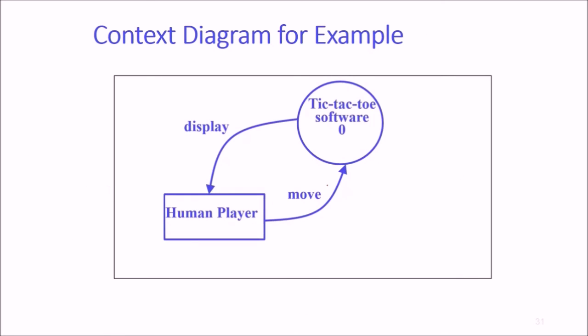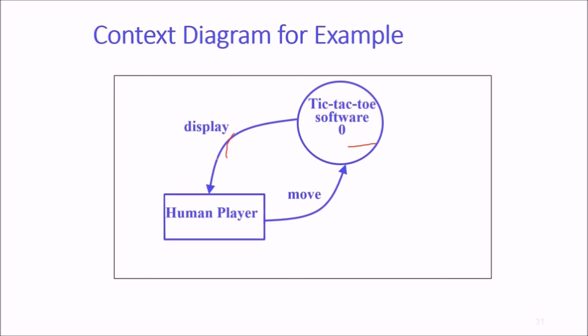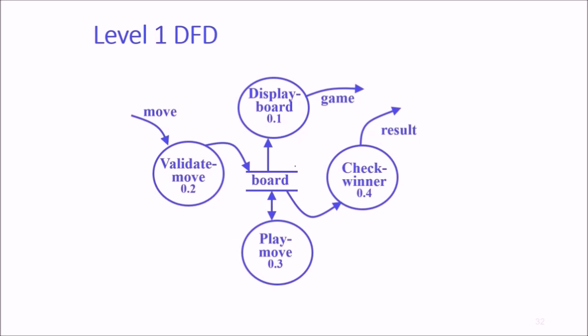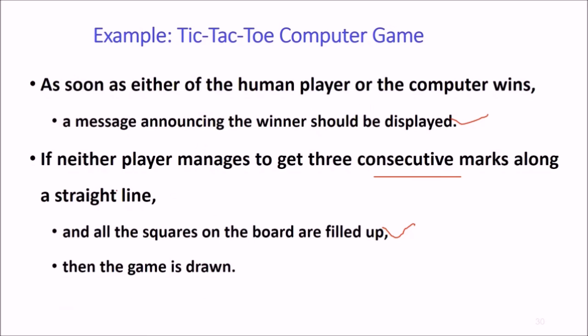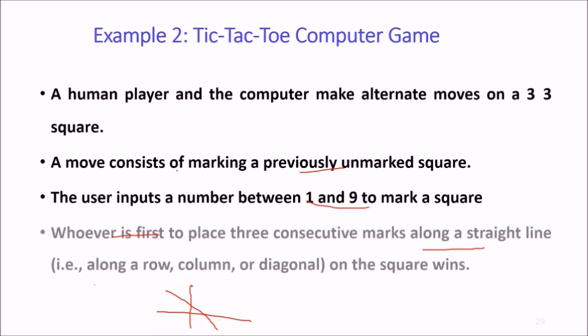If neither player manages three consecutive marks along a straight line and all squares are filled up, the game is drawn. The computer always tries to win. Context diagram: level 1 is human player, display, move, and tic-tac-toe software 0. Level 1: if move is there, we validate move, place it to the board, display board, check winner. Bubbles at level 1 are 0.1, 0.2, 0.3, 0.4.